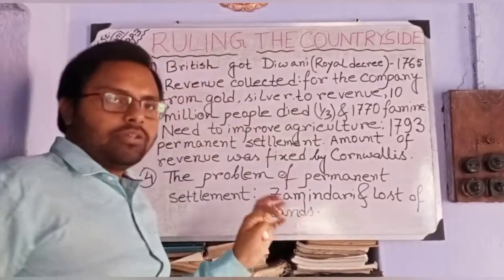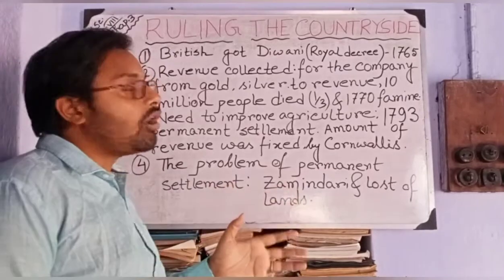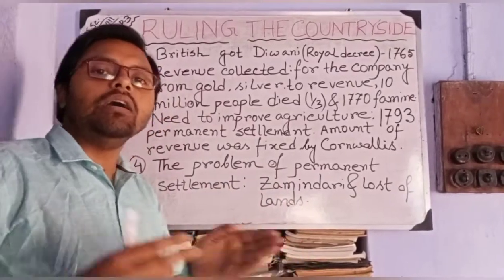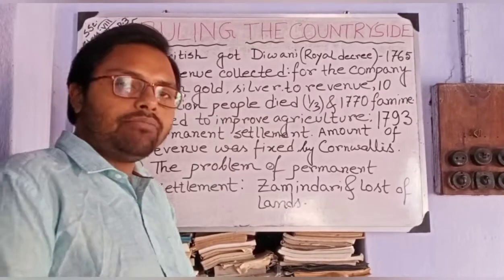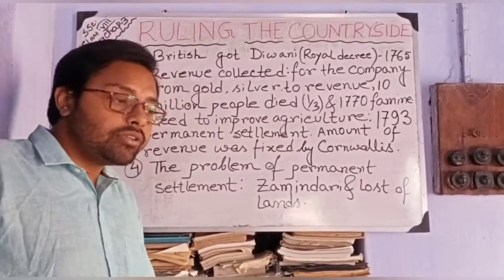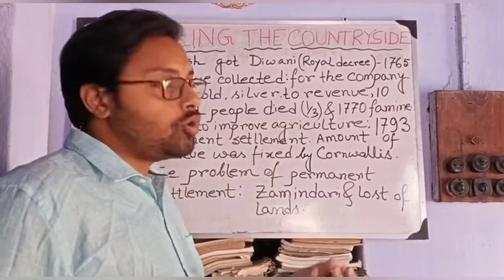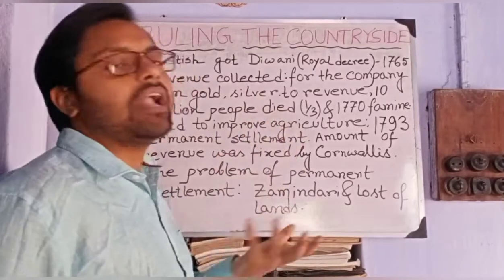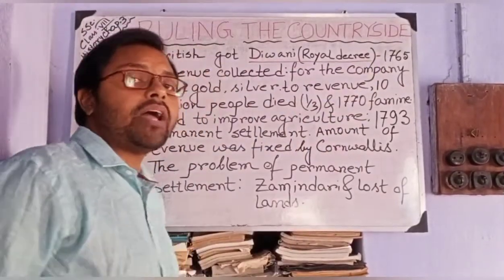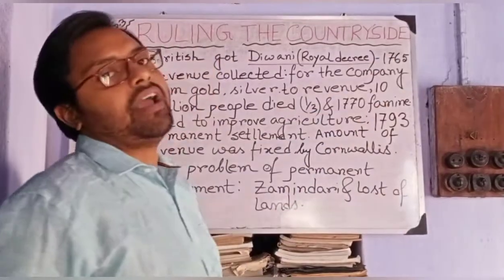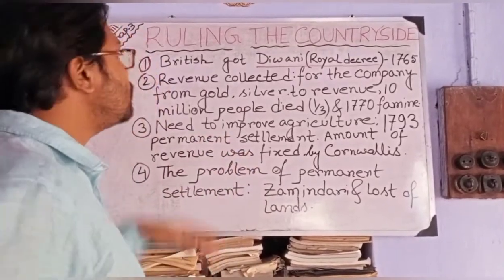Basically, we will discuss it with the following points. First, when did the British start their rule? They actually entered India as traders, as trade persons. And they later established the East India Company. They got Diwani — Diwani means Royal Decree — a special order given by the Mughal Emperor in 1765. They first got their permission for business by Mughal Emperor Jahangir.